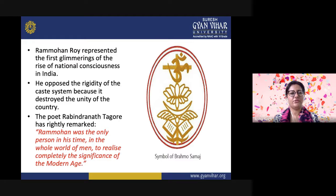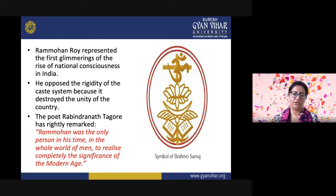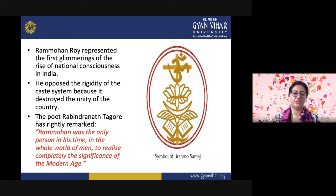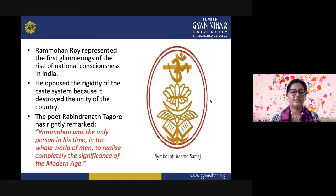Ram Mohan Roy also presented the first glimmerings of the rise of national consciousness in India. He opposed the rigidity of the caste system because it destroyed the unity of the country. The poet Rabindranath Tagore rightly remarked that Ram Mohan Roy was the only person in his time in the whole world to realize completely the significance of the modern age. On the right-hand side we can see the symbol of Brahma Samaj, as he believed that all religions are equal and there is only one God.